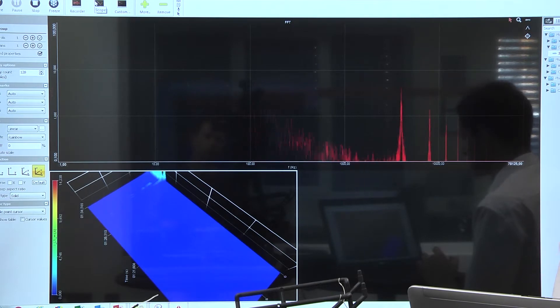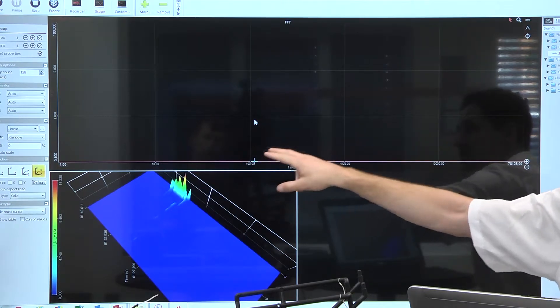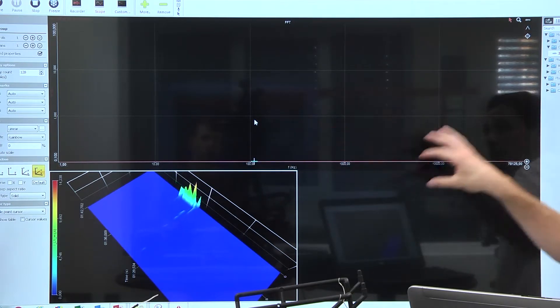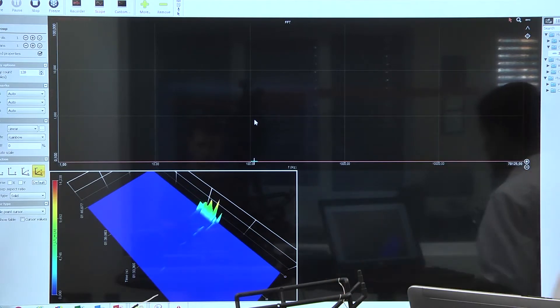In this 2D FFT, we can see the fundamental frequency increasing during acceleration. We also see the switching frequency at the higher frequencies, and below, the 3D FFT.